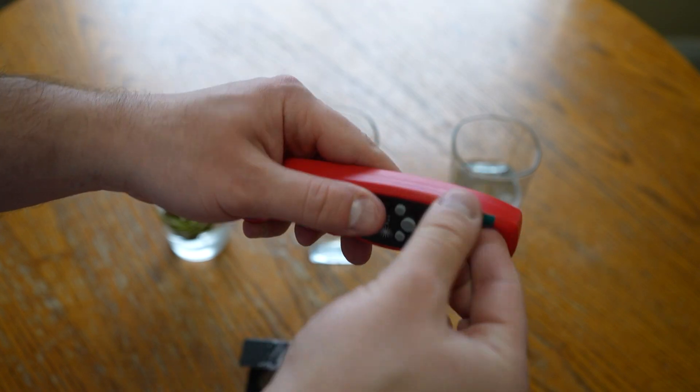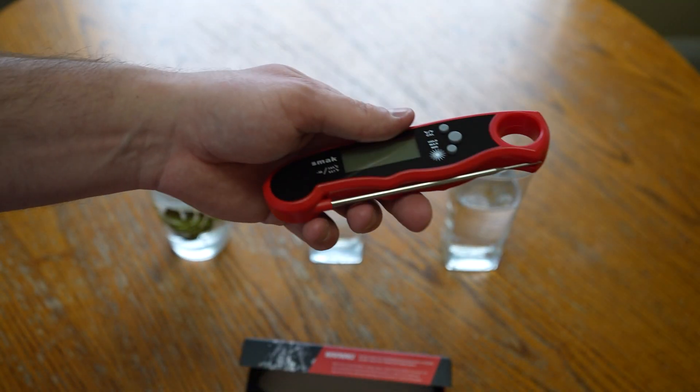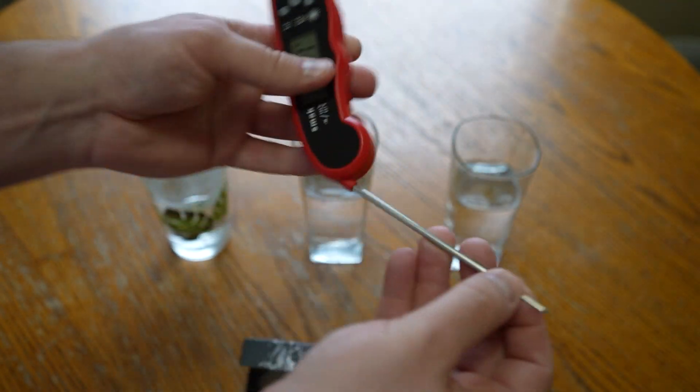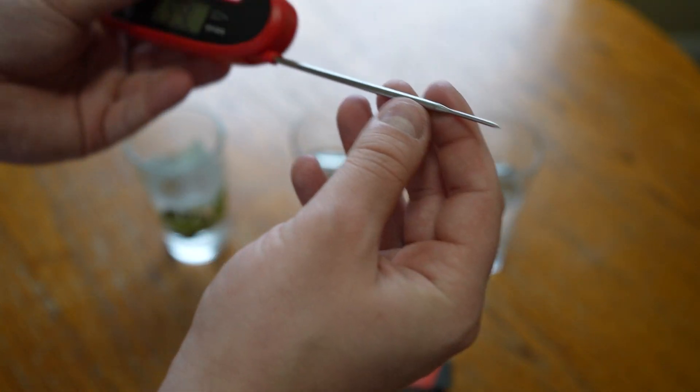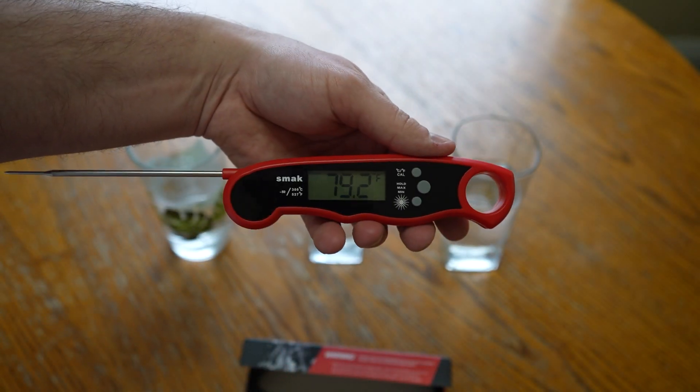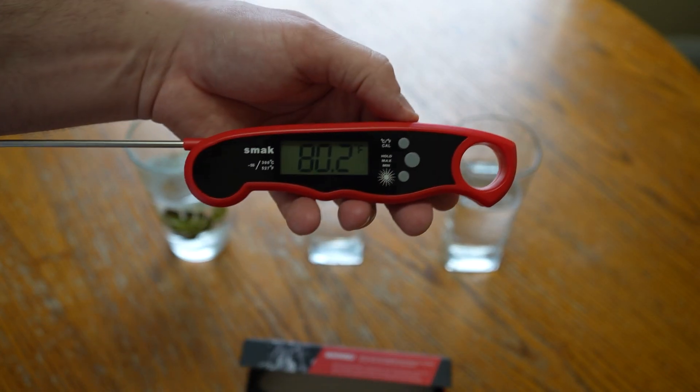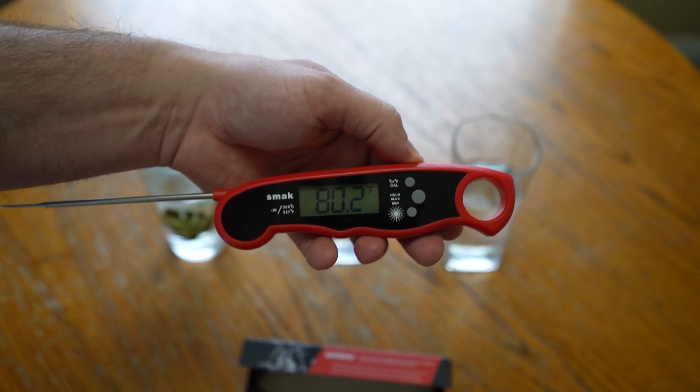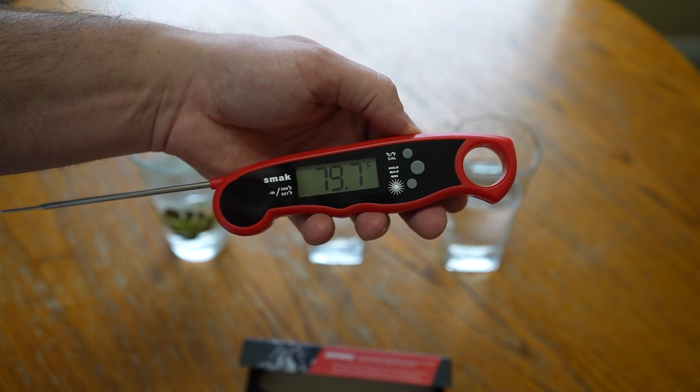Now this digital thermometer should be pretty straightforward to use. There's a little screen protector right there. It has a nice metal probe to it. You can stick this in as far as you need. You want to get this probably in the middle of the meat when you record it. You can see it automatically turned on. Right now it's in Fahrenheit. So we have 80 point whatever just out in the air.